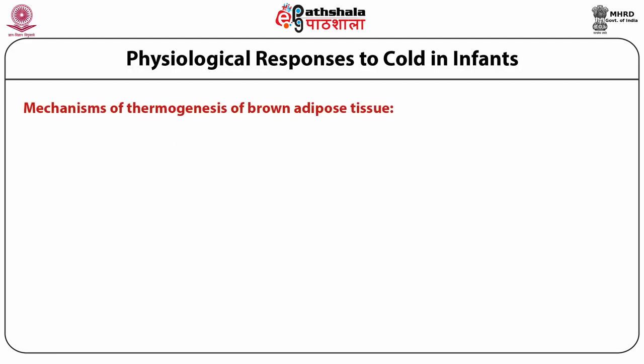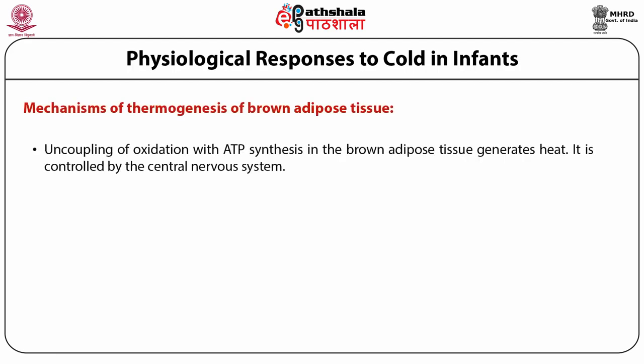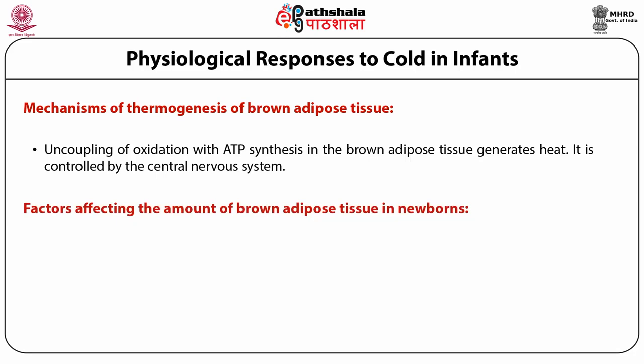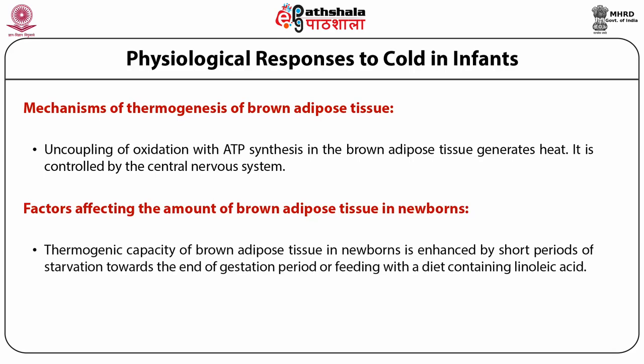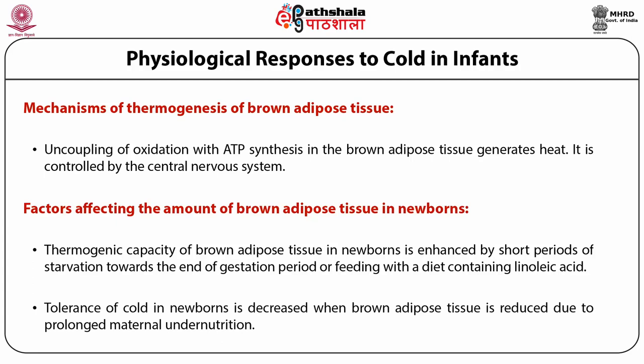Mechanism of thermogenesis of brown adipose tissue: uncoupling of oxidation with ATP synthesis in brown adipose tissue generates heat, controlled by the central nervous system. Heat production is enhanced by the interaction of noradrenaline and beta-adrenergic receptors of the brown adipose membrane. The thermogenic capacity of brown adipose tissue in newborns is enhanced by short periods of starvation toward the end of gestation or feeding with a diet containing linoleic acid. Tolerance to cold in newborns is decreased when brown adipose tissue is reduced due to prolonged maternal undernutrition.